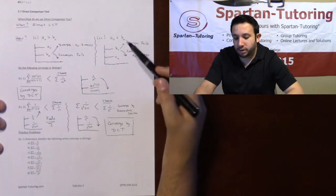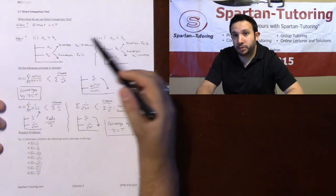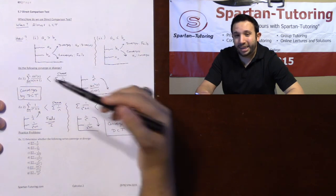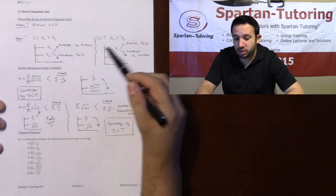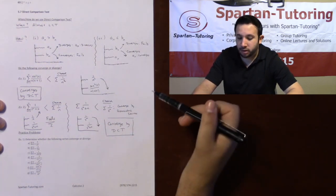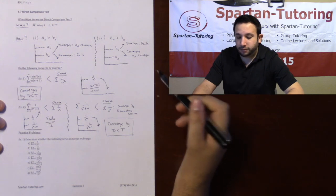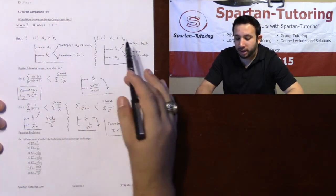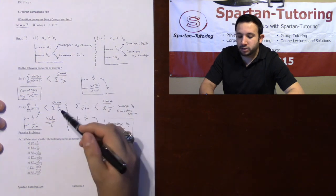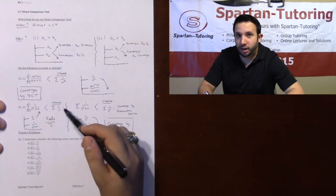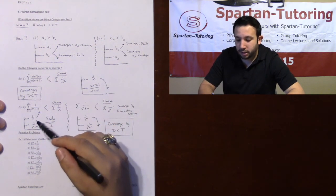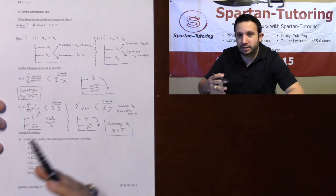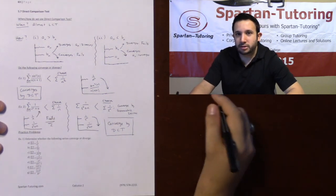This is how the direct comparison test works. Choose your B_n wisely, draw squiggly lines to visualize what's going on if it helps, and then determine whether it actually tells you anything about your A_n. Just because you choose something doesn't mean it's going to give you a conclusion — unlike the limit comparison test, you need to make sure it actually tells you something about your series.